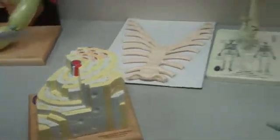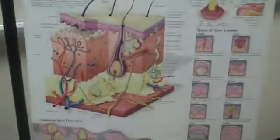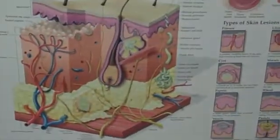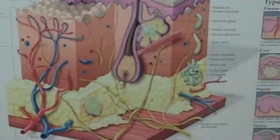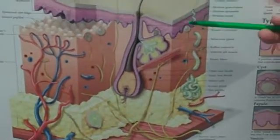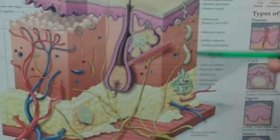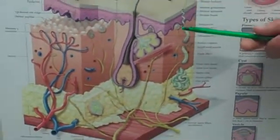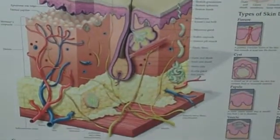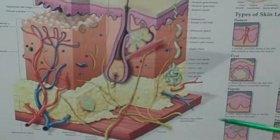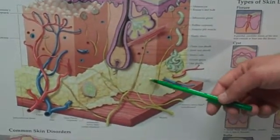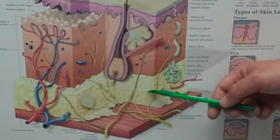Integument — let's go talk about the integument. We've got no model, we've got a picture. On the test, I'm going to cover up the writing and you guys are going to identify the parts. Epidermis, dermis, subcutaneous.